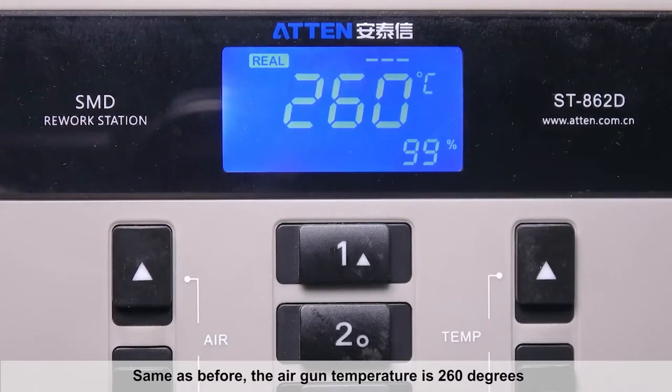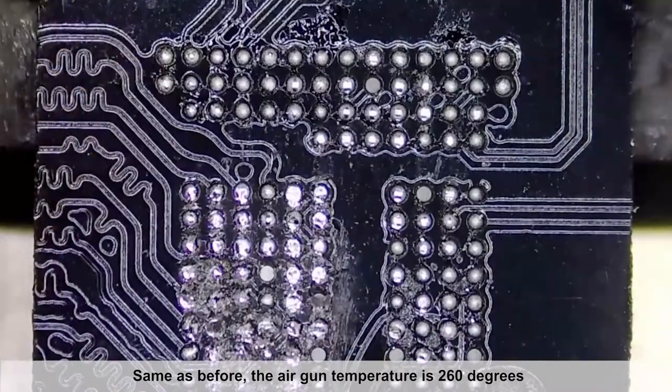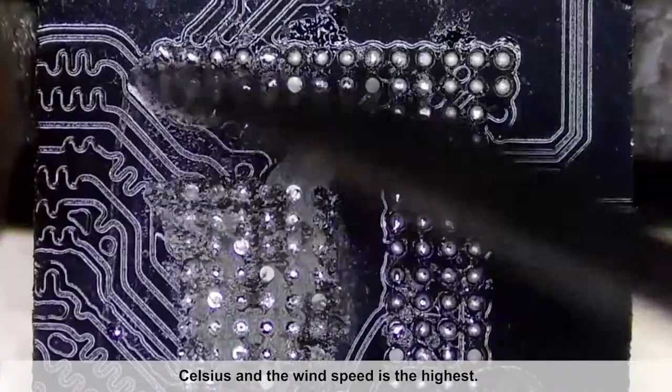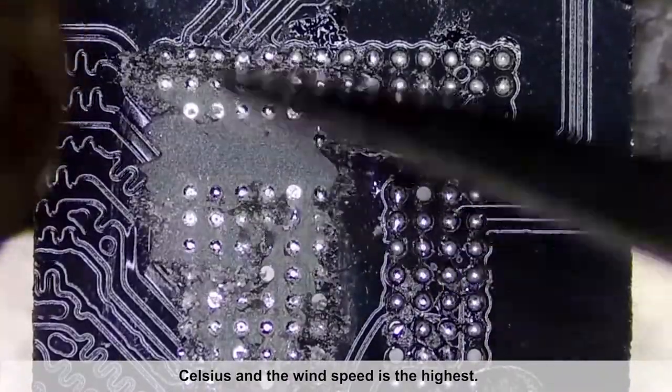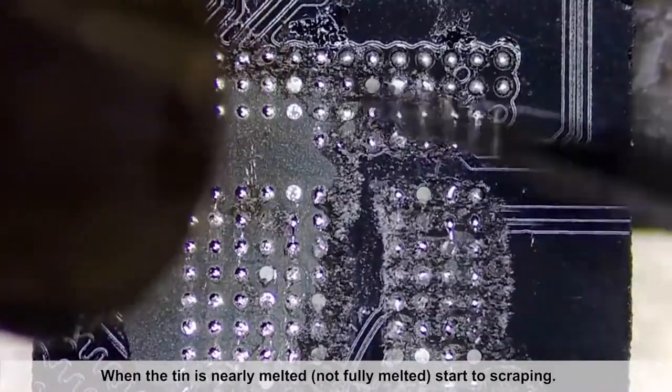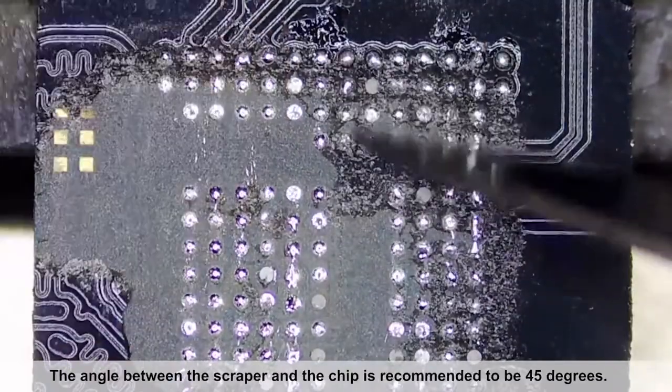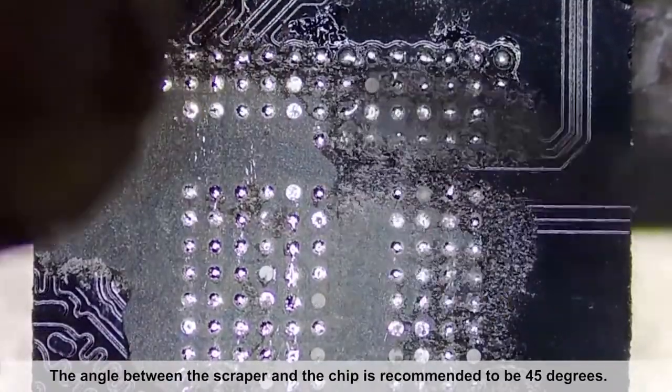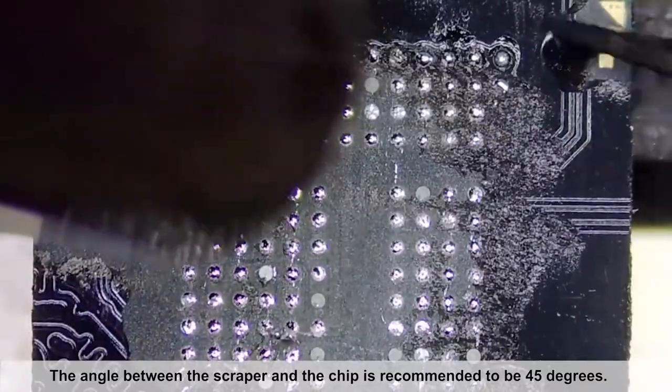Same as before, the air gun temperature is 260 degrees Celsius and the wind speed is the highest. When the tin is nearly melted, not fully melted, start to scraping. The angle between the scraper and the chip is recommended to be 45 degrees.